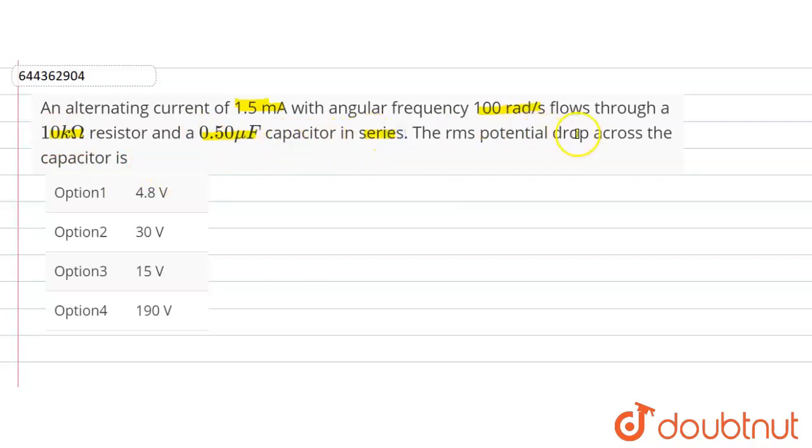The rms potential drop across the capacitor. So the circuit is here like this: resistance value 10 kilo ohm means 10 to the power 4 ohm is connected with capacitor, and this circuit is connected with this AC supply here. The rms potential drop across the capacitor we have to find, the potential drop across this capacitor, VC value we have to find.